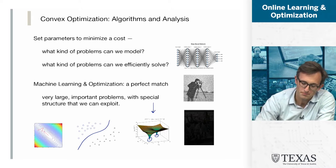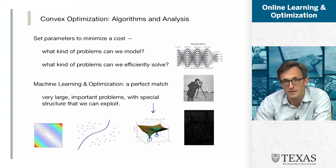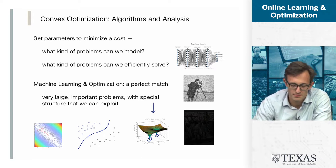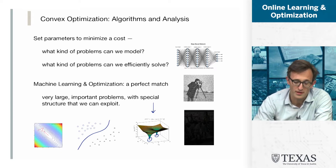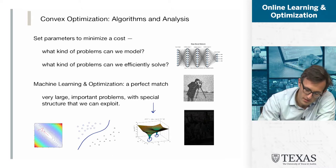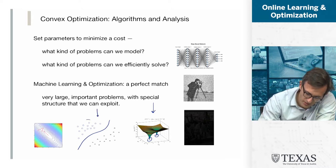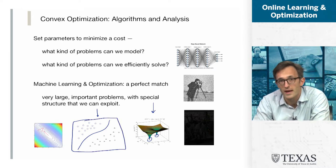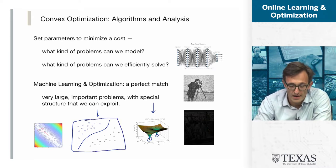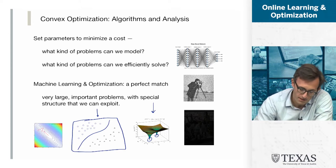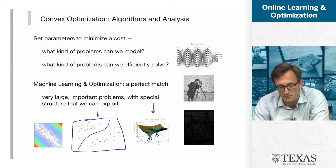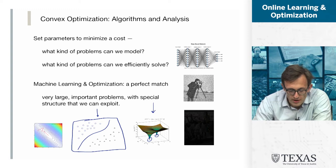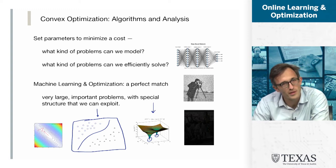A more interesting problem — and one that is really central in many areas of machine learning — is classification. Anything we draw on a two-dimensional screen has to be much simpler than what we actually care about in reality. In the classification problem shown here, the parameters are what parameterize the decision curve, so we can already see that it's a little more complicated.